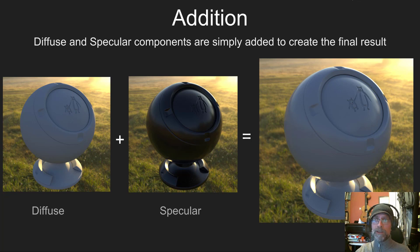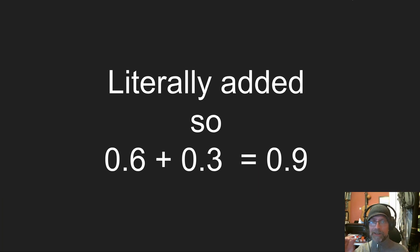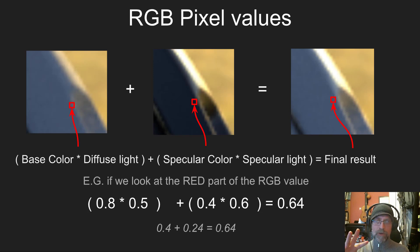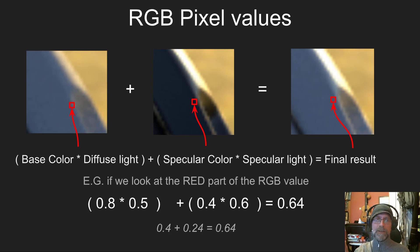When I say it's a simple matter of addition, I mean literally just addition — like 0.6 plus 0.3 equals 0.9. But this happens at a pixel level, so every single pixel on the screen has all its components of light added together per channel, like R, G, and B. It's still just simple addition and multiplication.